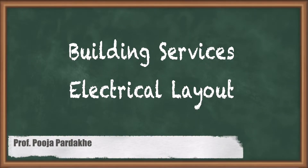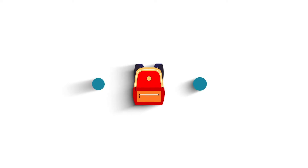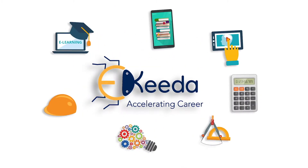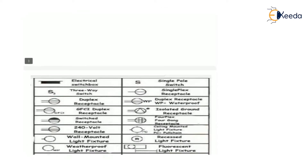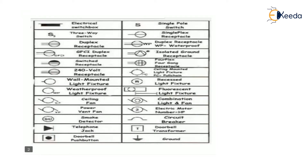Hello everyone. In this video we see the topic building services as an electric layout. These are the symbols which we use for electric purposes as per IS 962. A drawing is made up of different types of symbols, that's why for making the electric layout in a drawing we require the symbols accordingly — the electric symbols.